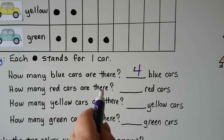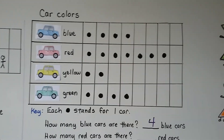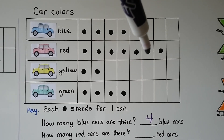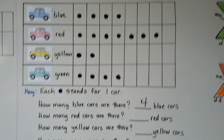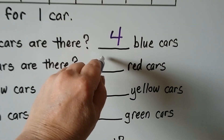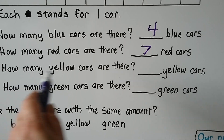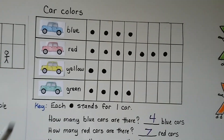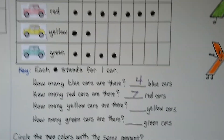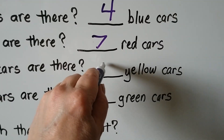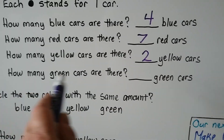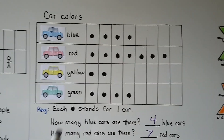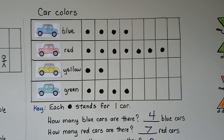How many red cars are there? We look at the picture graph and count the red cars: one, two, three, four, five, six, seven. Seven red cars. How many yellow cars are there? We look at the picture graph and see that there are two yellow. How many green cars are there? We look at the picture graph again and count: one, two, three, four green cars.